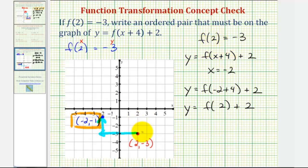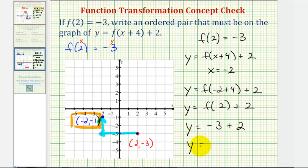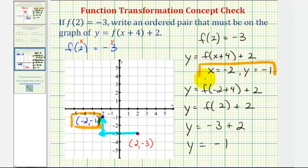And we know f of two equals negative three, so this leaves us with y equals negative three plus two. Notice how this plus two adds two to the y coordinate of the original point, shifting the point up two units. And negative three plus two is negative one. So if x is negative two, then y must be negative one. So whichever way we look at it, the point negative two comma negative one must be on the function y equals f of the quantity x plus four plus two.